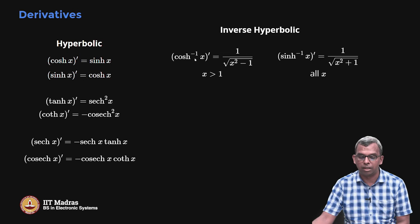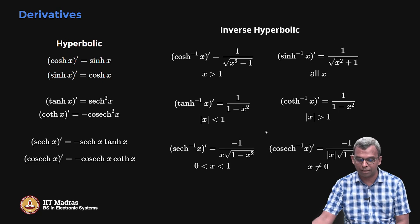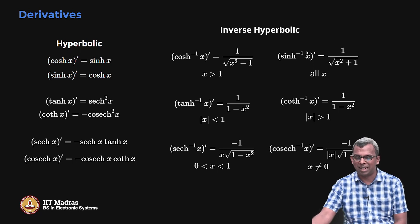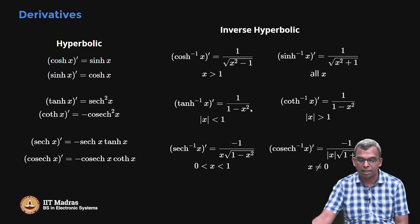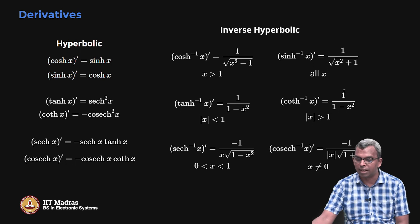For the inverse hyperbolic functions, the derivatives become very interesting. The derivative of cosh⁻¹ is 1/√(x²-1), sinh⁻¹ is 1/√(x²+1), and tanh⁻¹ and coth⁻¹ give rational forms. You also get 1/(x√(1-x²)) and similar rational forms, with various ranges for x — for example, |x| < 1 versus |x| > 1 for tanh⁻¹ and coth⁻¹ respectively.